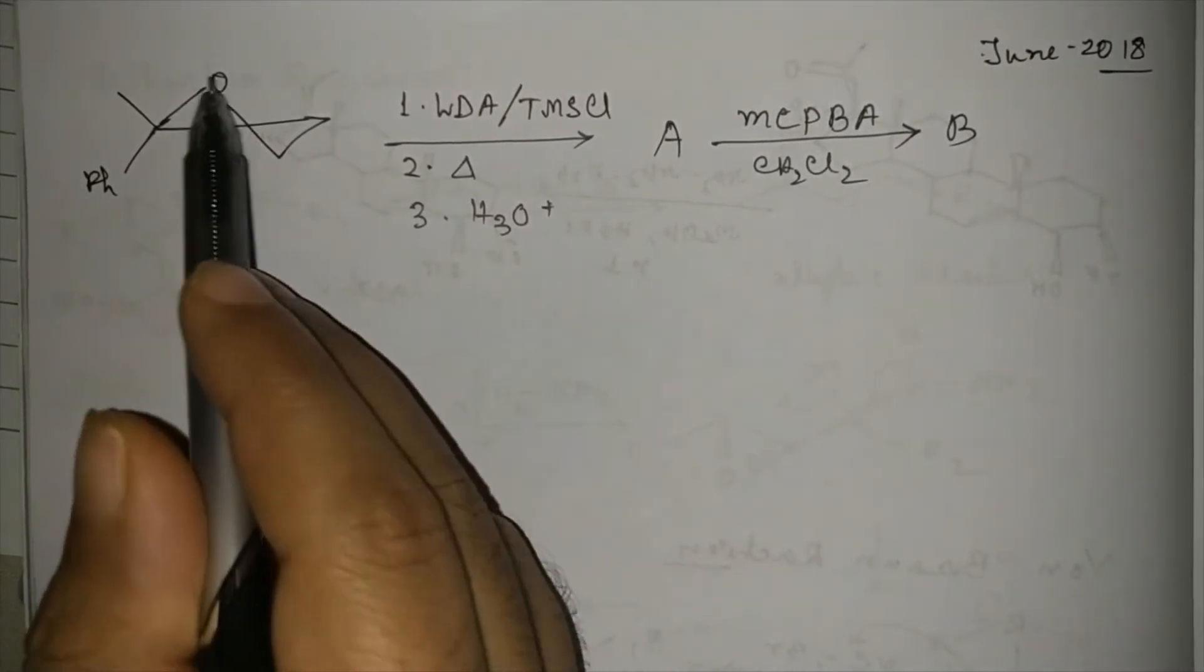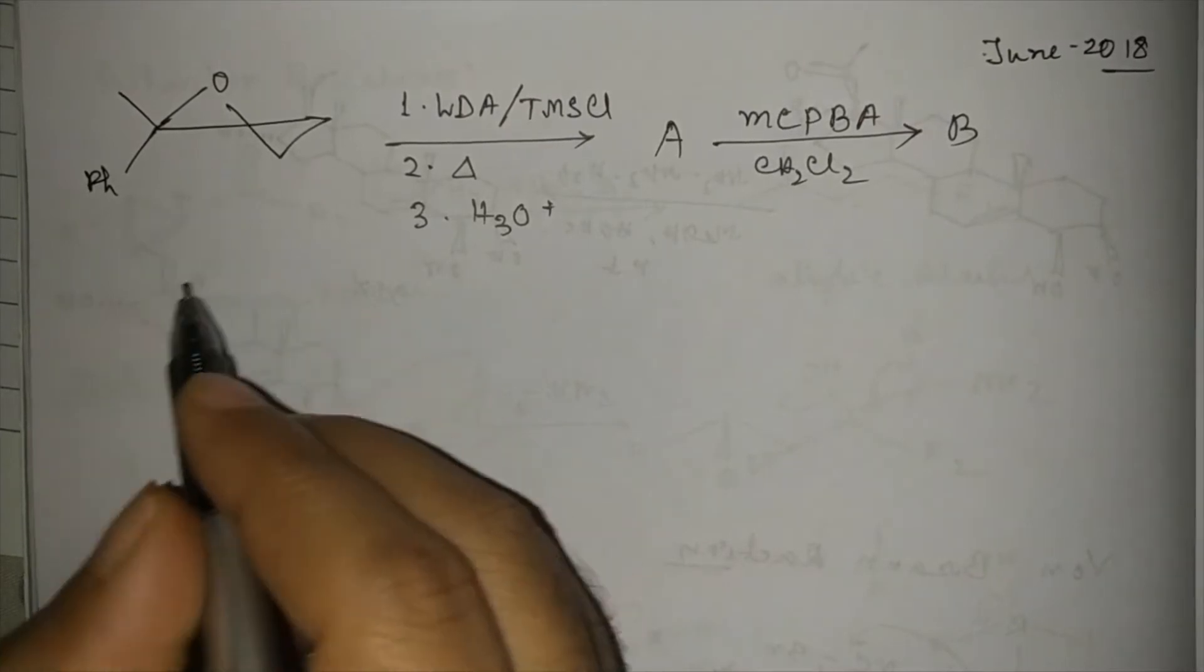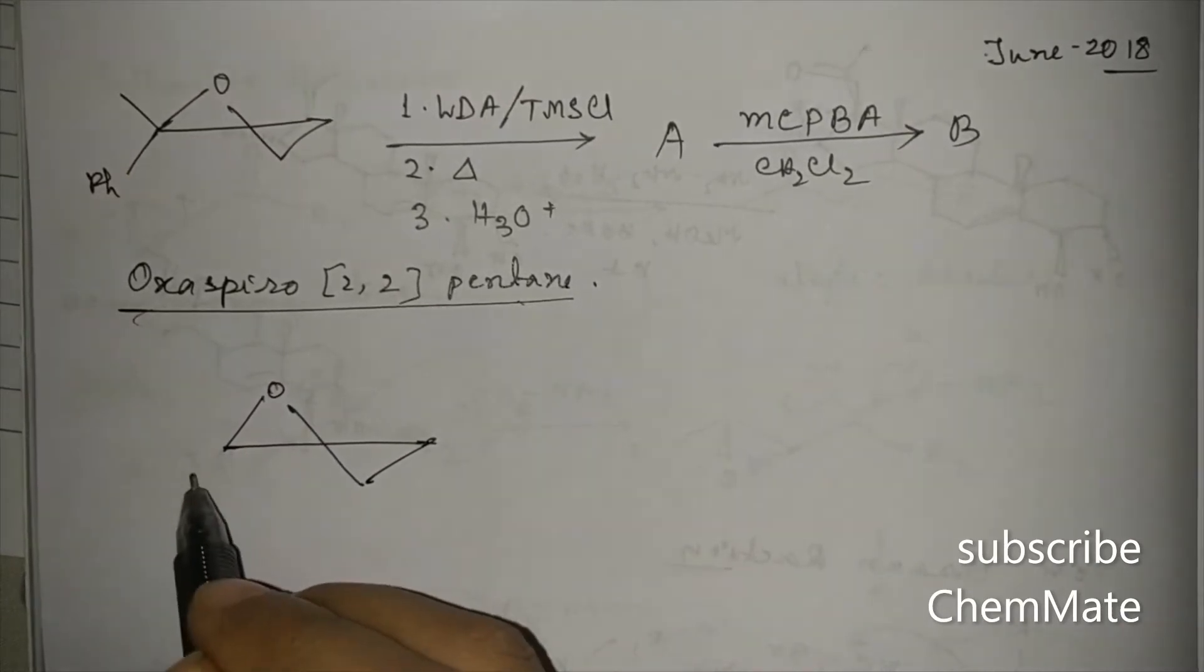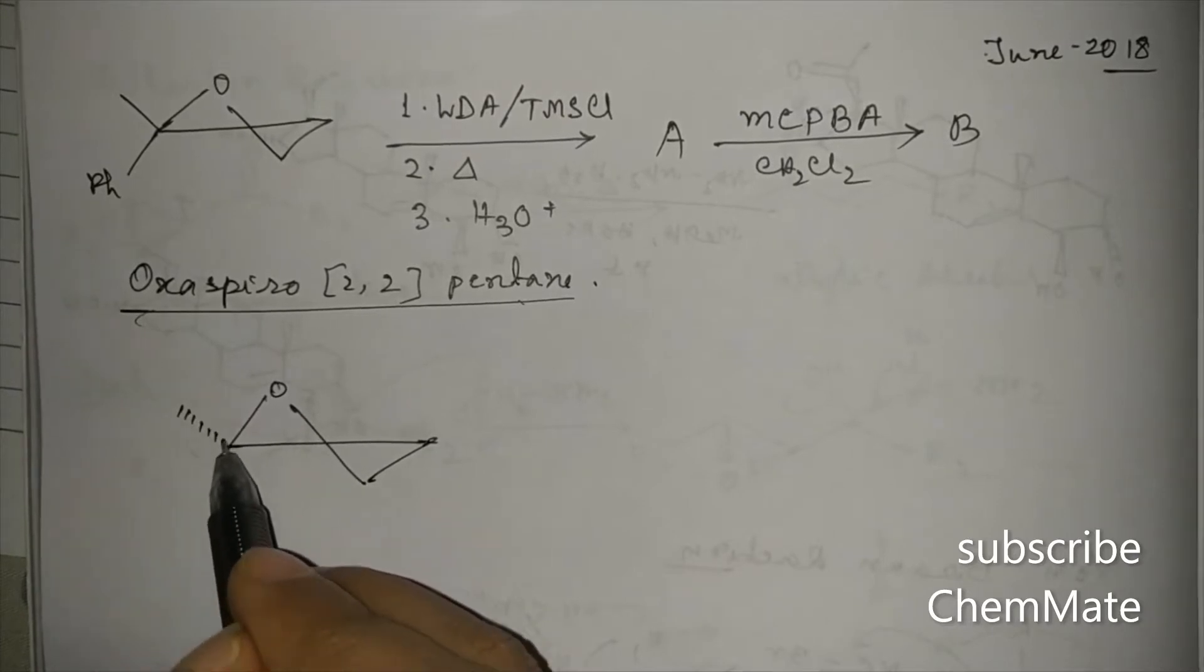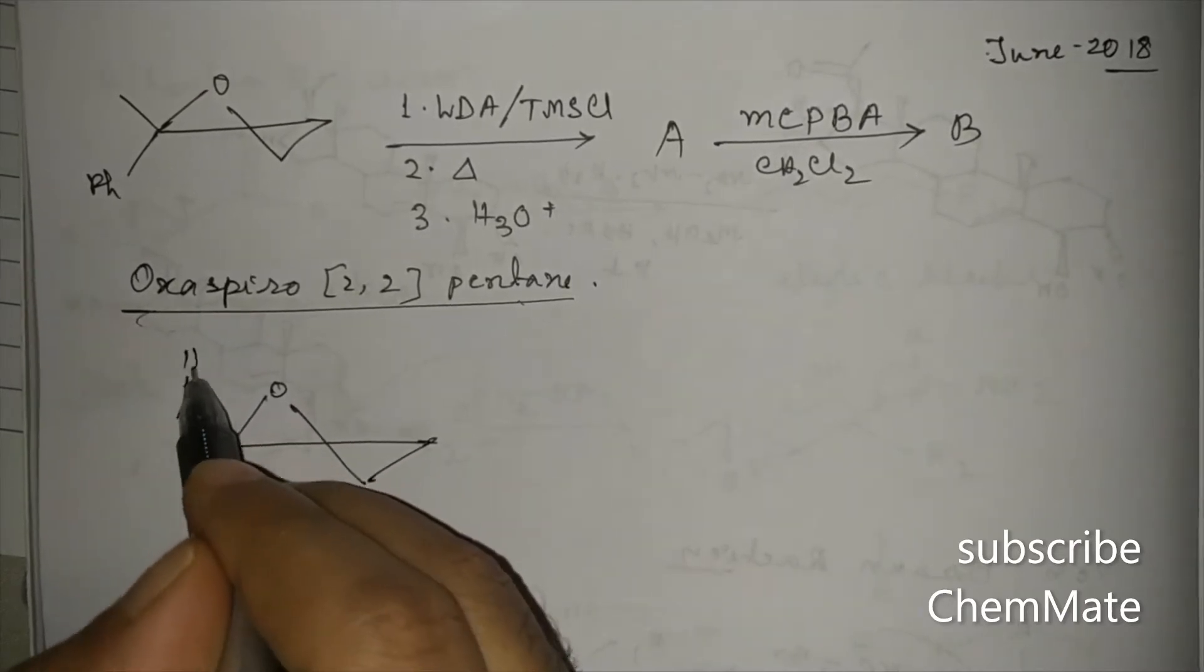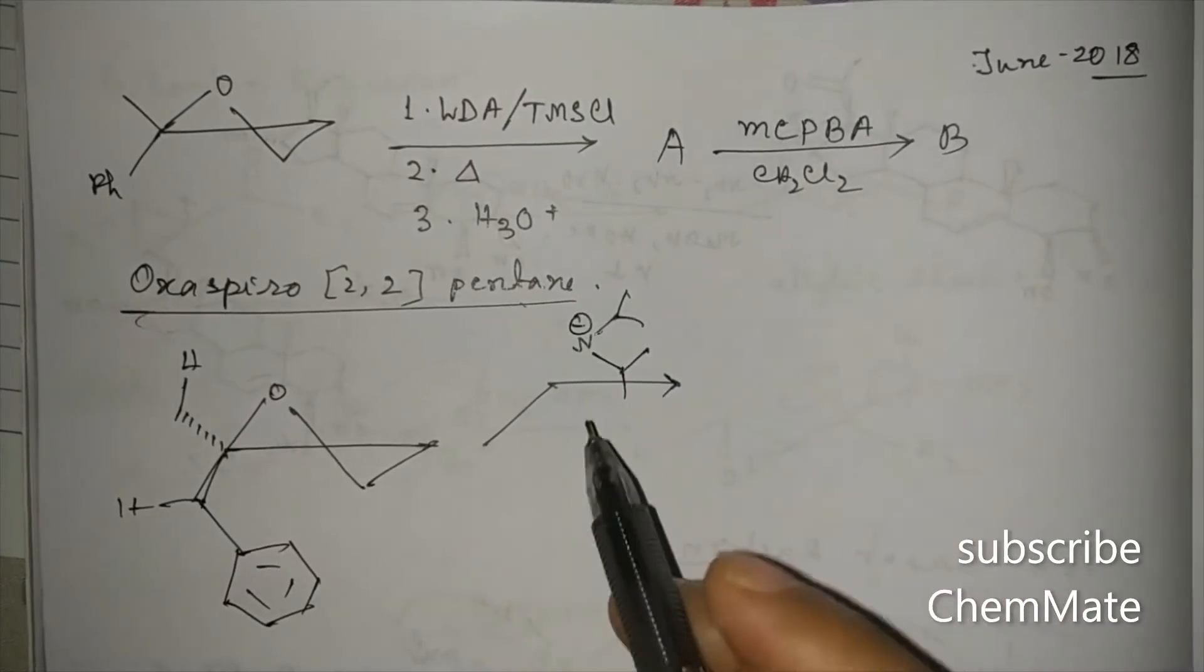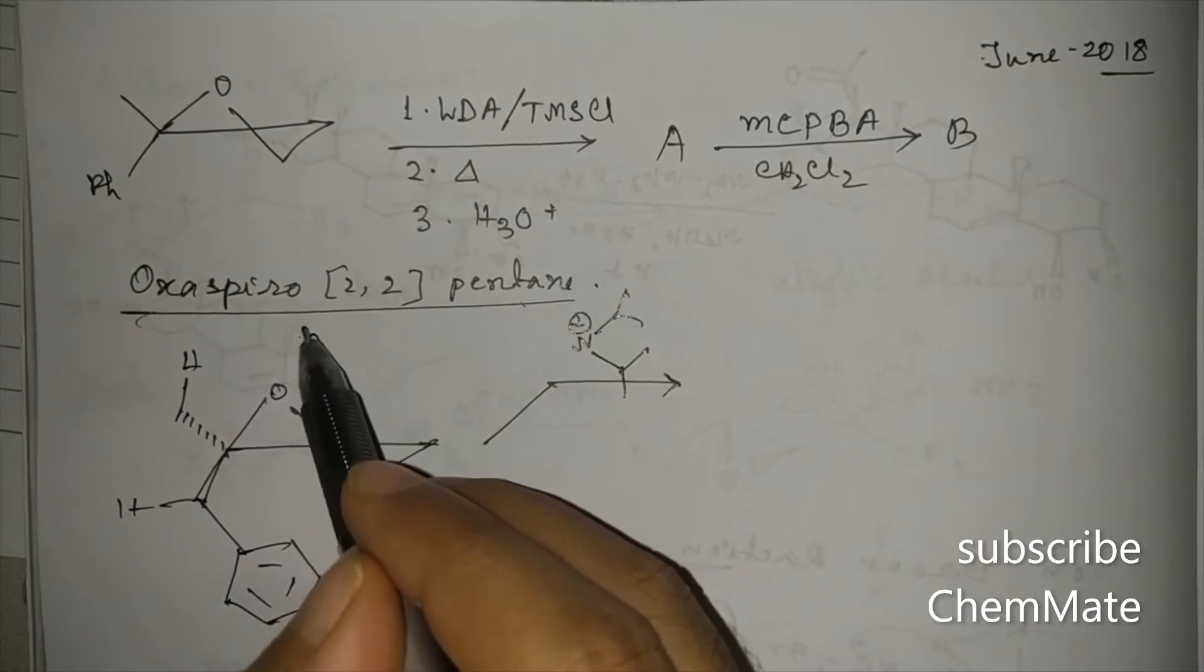Before going to the problem in detail, we have to discuss reactions of oxaspiro systems with a base. This is the oxaspiro [2,2] pentane. It is treated with a base. Let's say here two groups are there. Now, if you treat it with a base, that is LDA, lithium diisopropylamide, that is a quite bulky base.